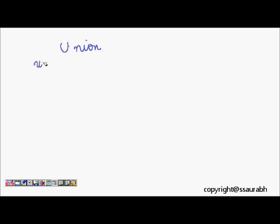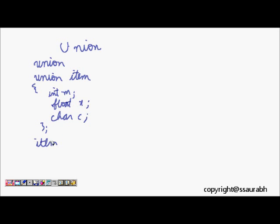The keyword used is union itself. If we write union item with int m, float x, char c, this is the union item. If I define item, union item i1.